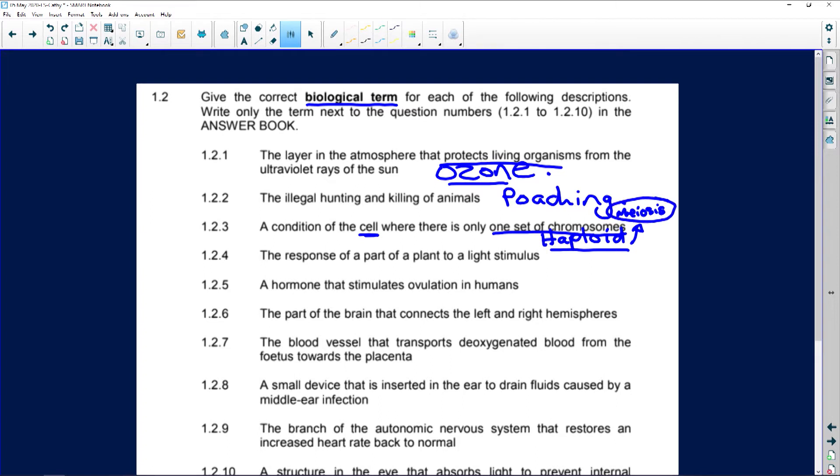The response of a part of the plant to a light stimulus. Anything to do with light is photo. And to move to light, to respond to that light, is going to be called phototropism.